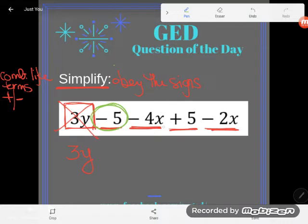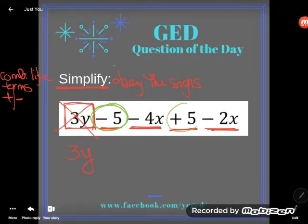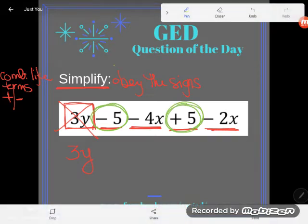So that's not a constant, it has an x. But this next one, the plus 5, sure is a constant. It doesn't have any letters. Next one, negative 2x is not a constant. It has a letter.